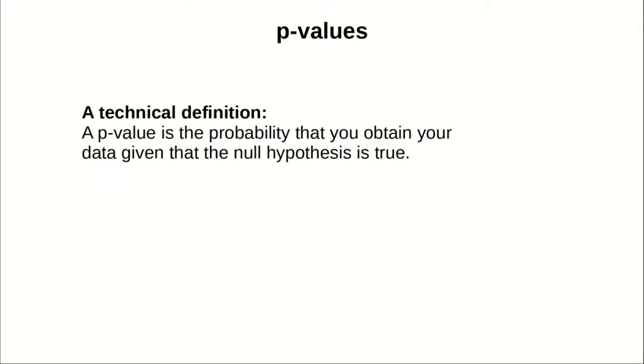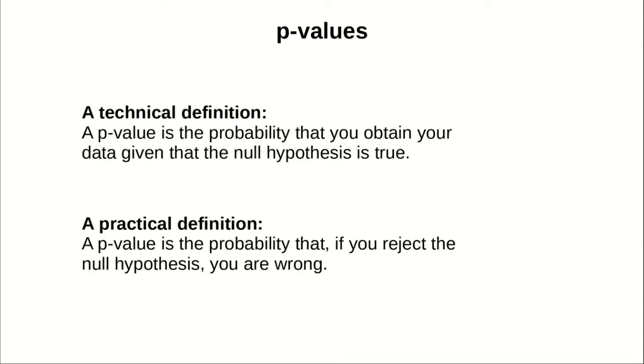What is a p-value? A p-value is the probability that you obtain your data given that the null hypothesis is true. It's a bit confusing definition, but there is another practical definition which is the same. A p-value is the probability that if you reject the null hypothesis, you are wrong.